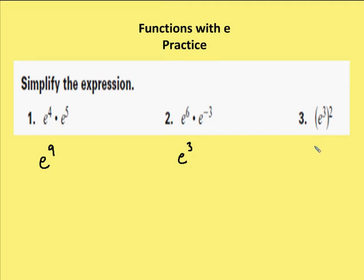In my third expression, e to the 3rd taken to the 2nd, I use my power of the powers property. That becomes e to the 6th. Okay, moving on.